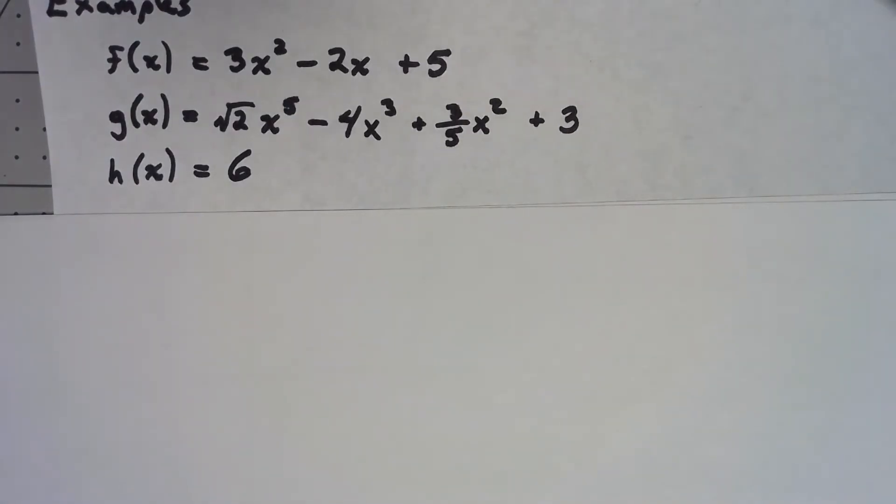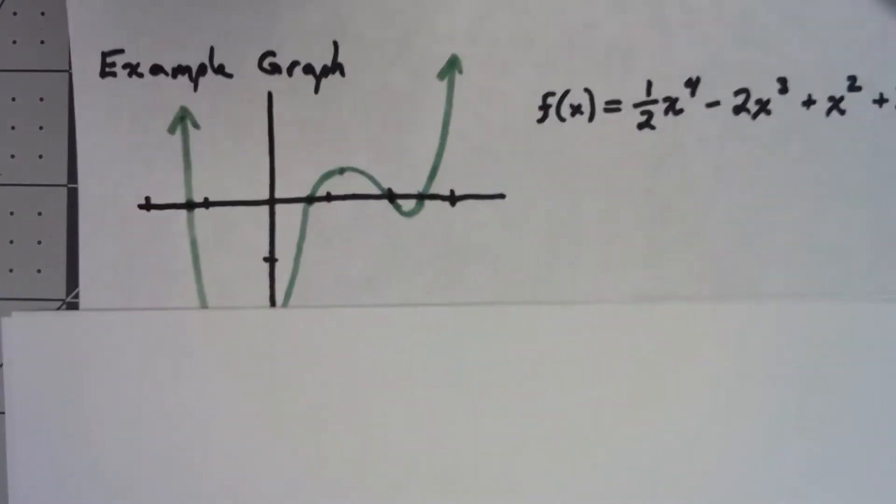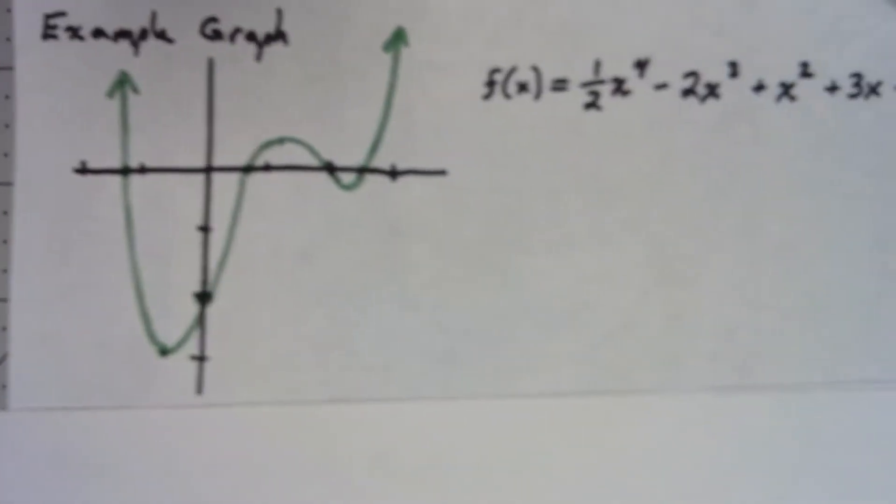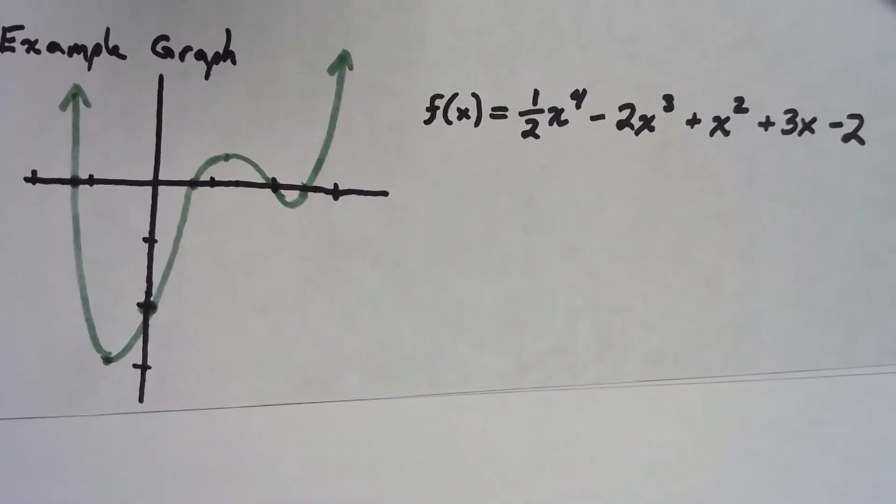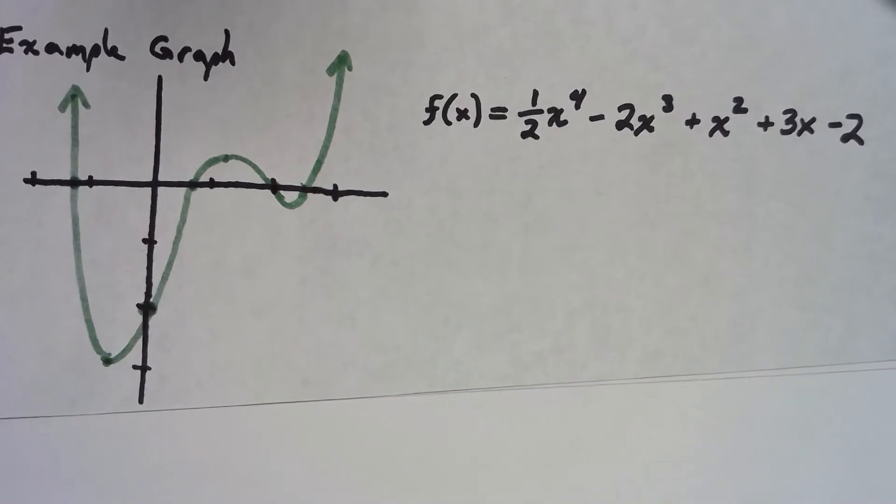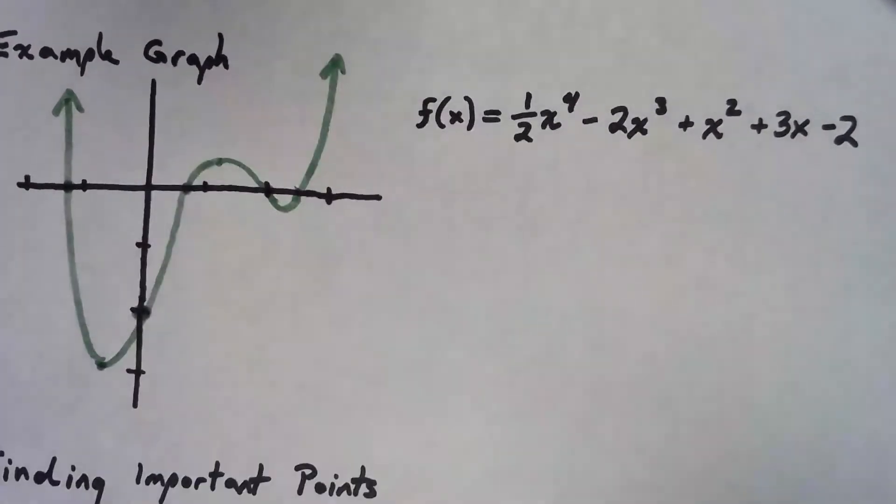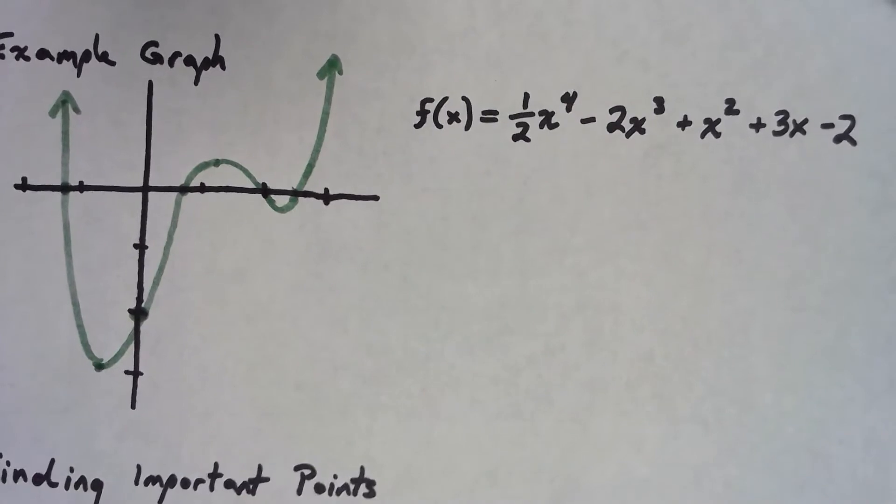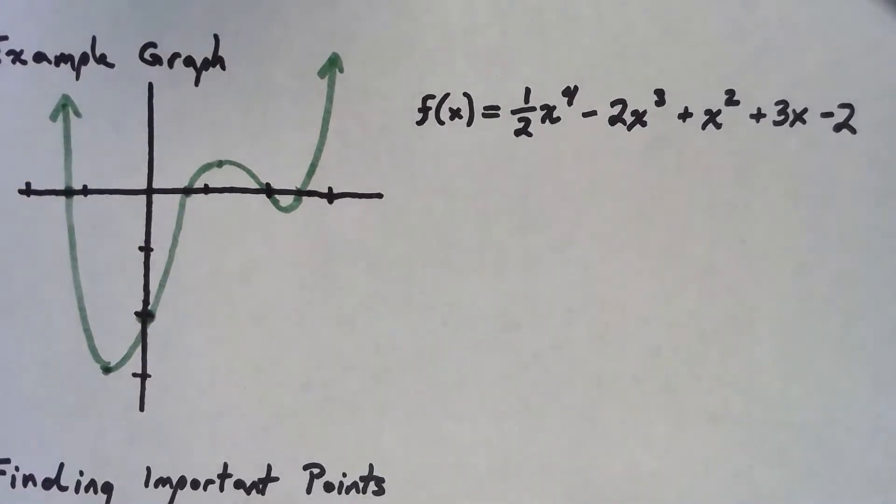What we really care about here to start off with is thinking about the graphs of these things. So I've got a fairly complicated polynomial here and I've gone ahead and sketched out what the graph looks like. Now what are the most important points on this graph?